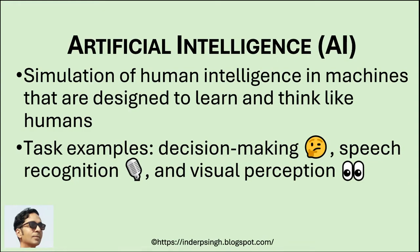To begin, let's define what we mean by artificial intelligence, abbreviated as AI. What is artificial intelligence? AI refers to the simulation of human intelligence in machines. These machines are designed to learn and think like humans, performing tasks that typically require human intelligence such as decision-making, speech recognition, and visual perception.